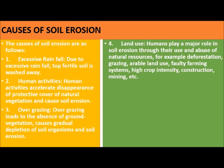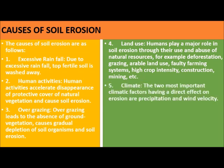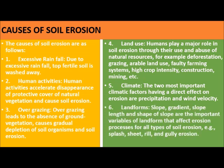4. Land use: humans play a major role in soil erosion through their use and abuse of natural resources — for example, deforestation, grazing, arable land use, faulty farming systems, high crop intensity, construction, and mining. 5. Climate: the two most important climatic factors having a direct effect on erosion are precipitation and wind velocity. 6. Landform: slope, gradient, slope length, and shape of slope are important variables of landform that affect erosion processes for all types of soil erosion.